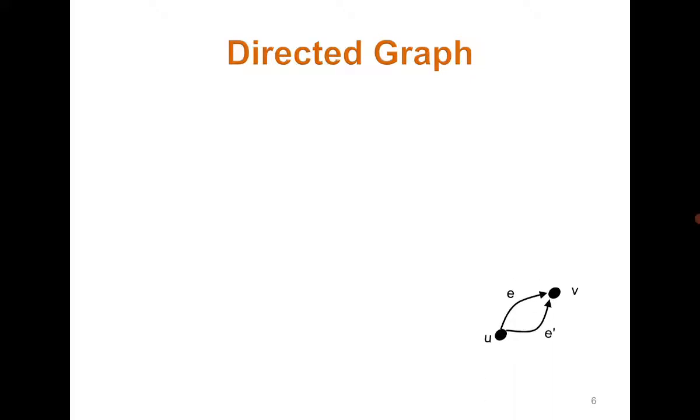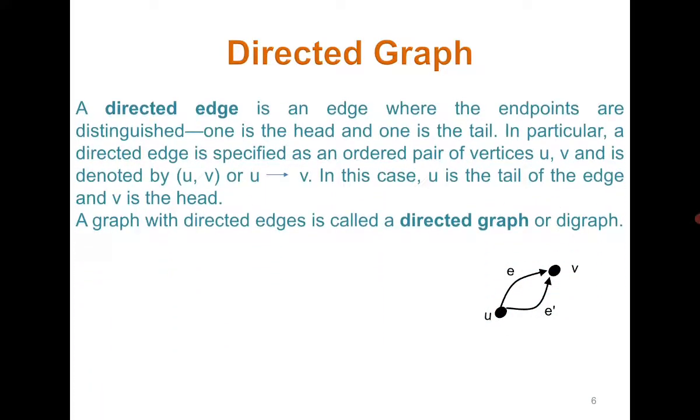Now the directed graph. Until now we have considered undirected graphs. Whenever it is not mentioned, if we simply say a graph, it means we are talking of a finite undirected graph. We do not write undirected every time. But if it is a directed graph, we mention it.